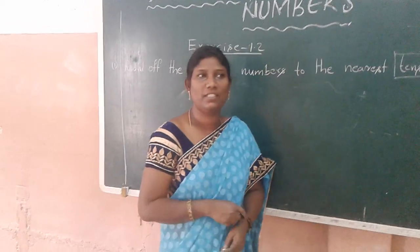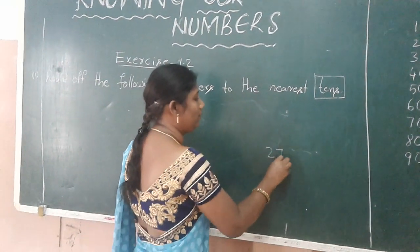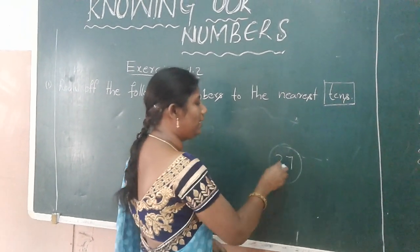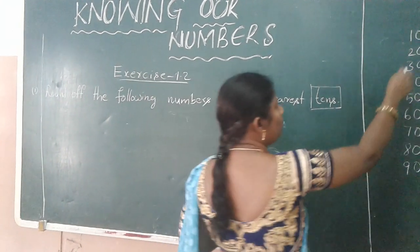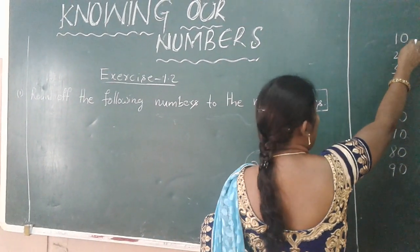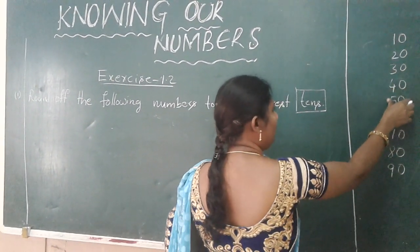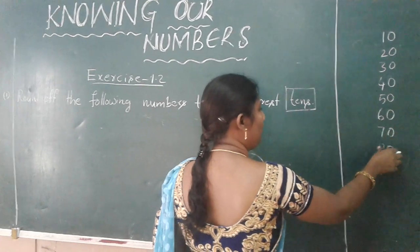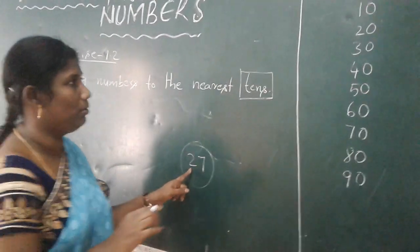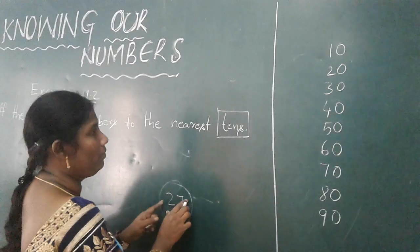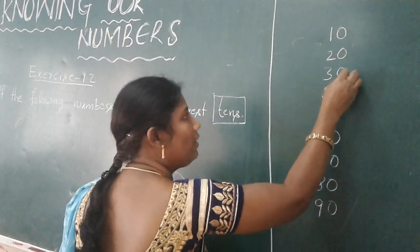A small test for you. Take the number 27. 27 is nearer to which tens? Is it nearer to 10, 20, 30, 40, 50, 60, 70, 80, or 90? 27 is closest to 20 or 30?